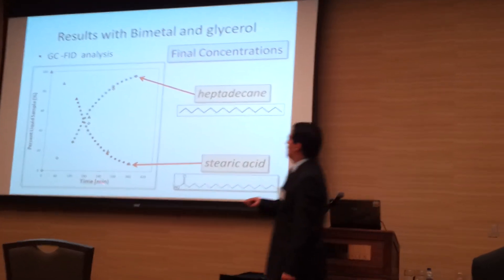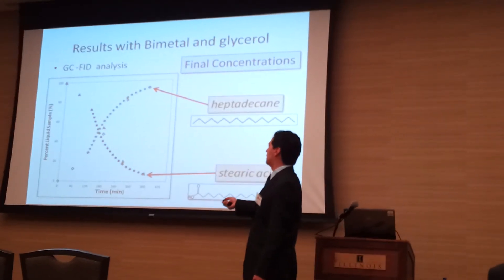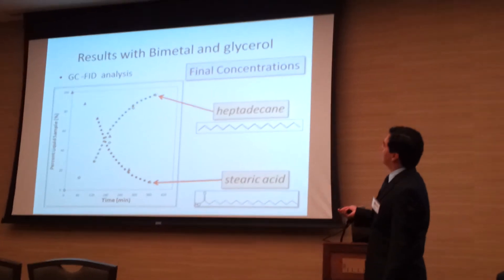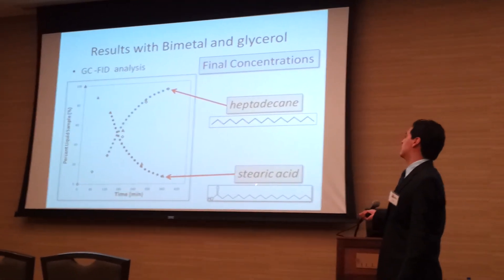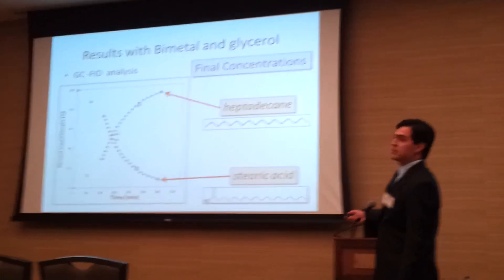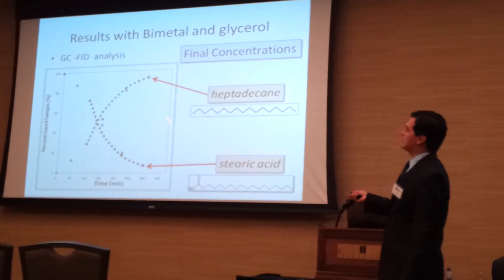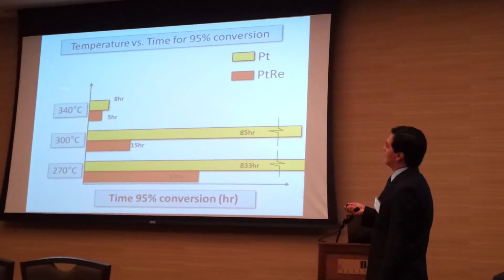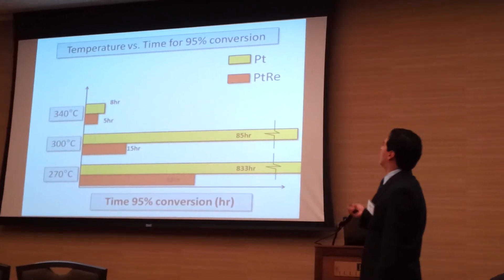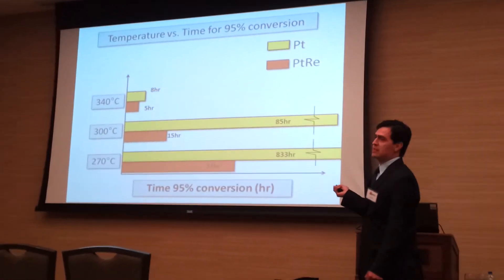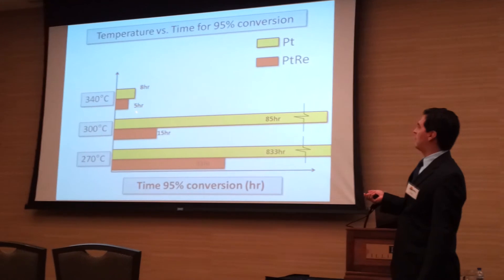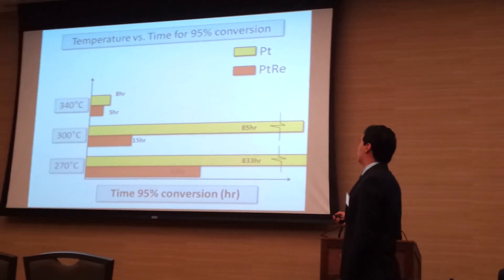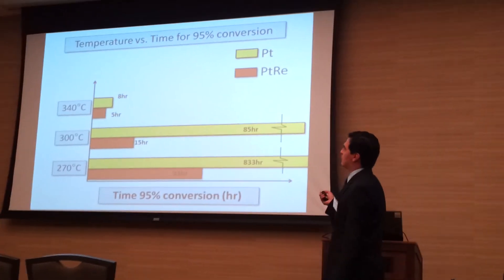Our results show that by taking samples every hour over six hours, stearic acid becomes heptadecane at a rate of about 90%, using bimetal catalyst at 300 degrees Celsius. We ran experiments at 340, 300, and 270 degrees Celsius with single metal and bimetal. In each case, the bimetal performs better. The times for 95% conversion of stearic acid to heptadecane were only 5 hours, 15 hours, and 33 hours respectively. From these studies, we have concluded that the bimetal works better.